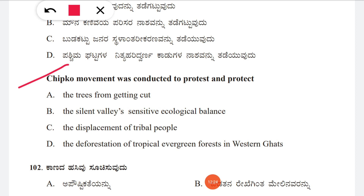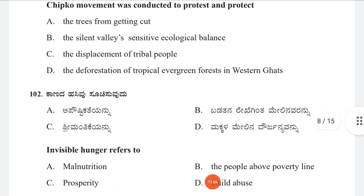Question 101: The Chipko movement was conducted to protest and protect — option A: the trees from getting cut, B: the Silent Valley's sensitive ecological balance, C: the displacement of tribal people, D: the deforestation of tropical evergreen forests in Western Ghats. The correct answer is A, the trees from getting cut.